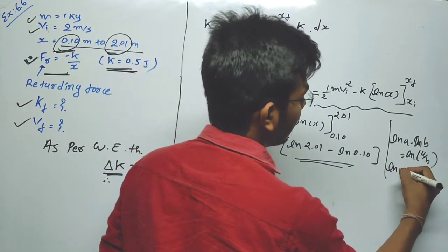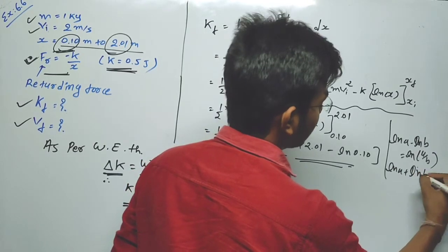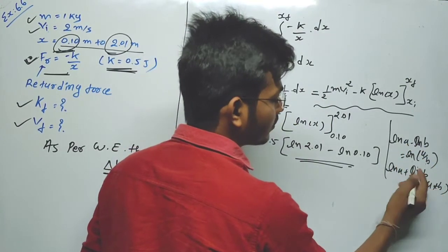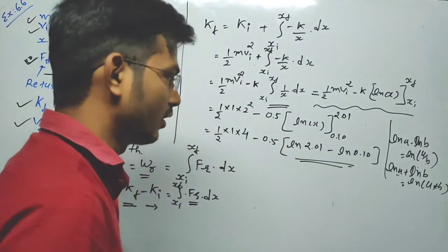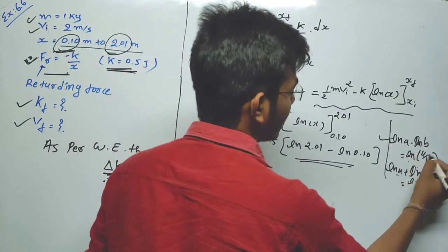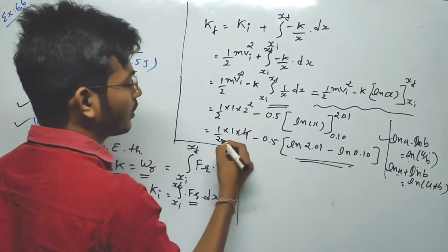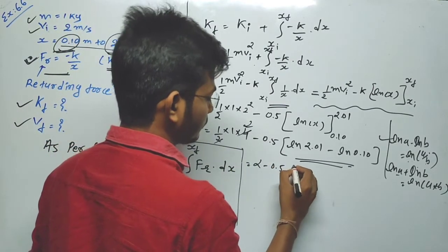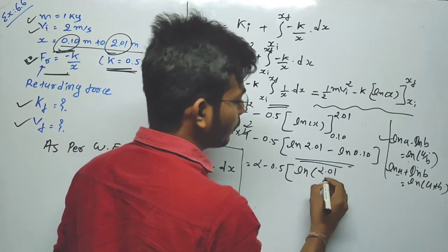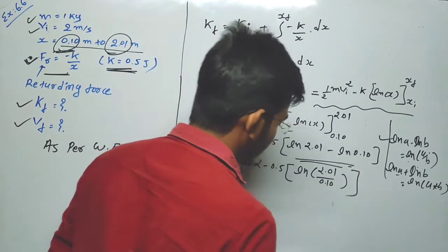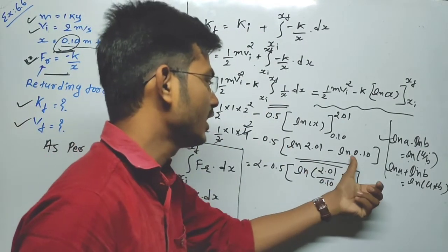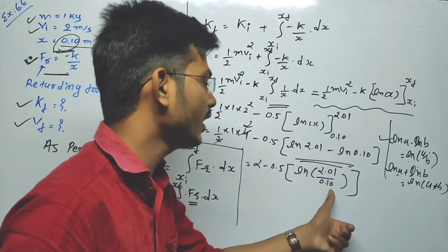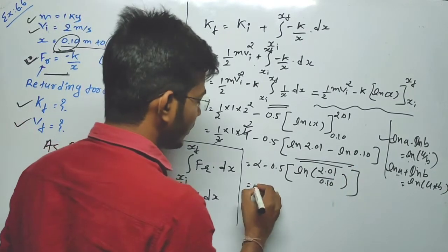Similarly, if it were ln(a) + ln(b), it would become ln(a × b). But in our case it is minus, so it becomes division: ln(a/b). Therefore we get ln(2.01/0.10) = ln(20.1).